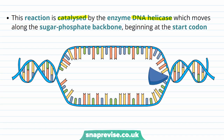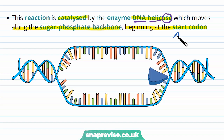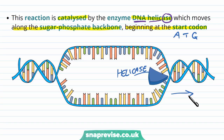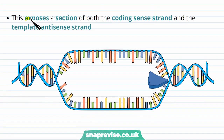DNA helicase is named because it acts on DNA and aims to break down the helix. It moves along the sugar-phosphate backbone of the DNA and starts at the start codon, which is usually ATG. The helicase recognizes the start codon and continues to unzip the DNA, resulting in an exposed area of the DNA helix where both the coding sense strand and the template antisense strand are free to be accessed.